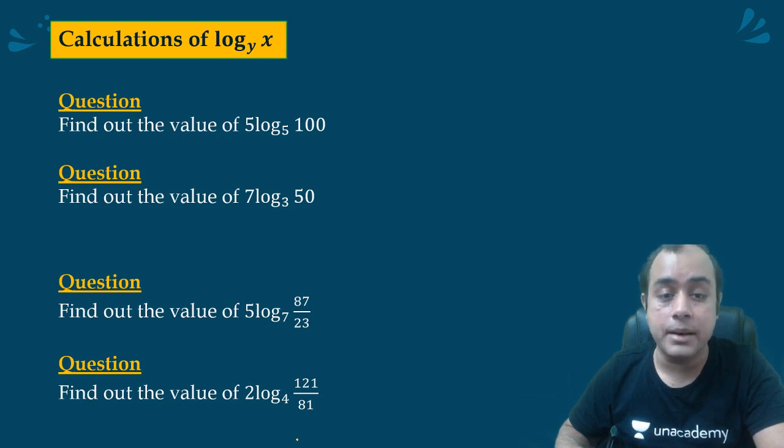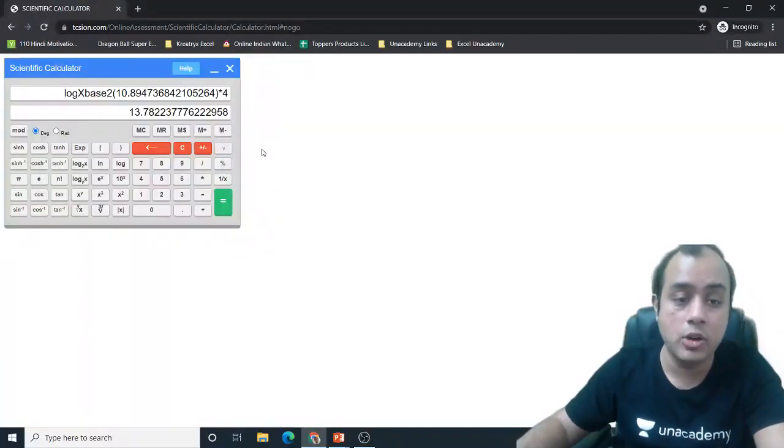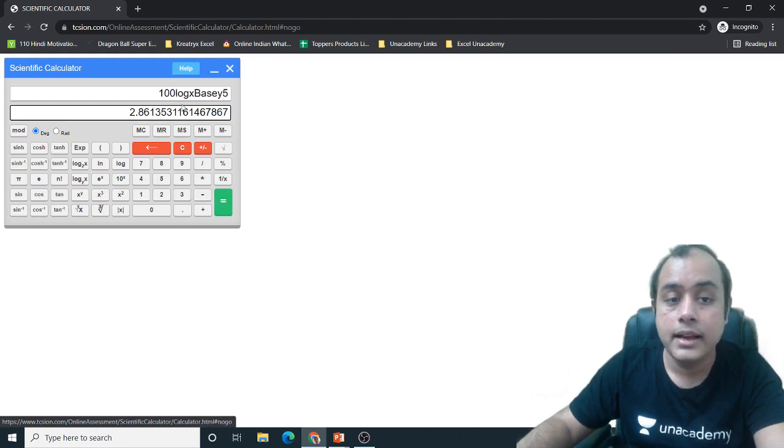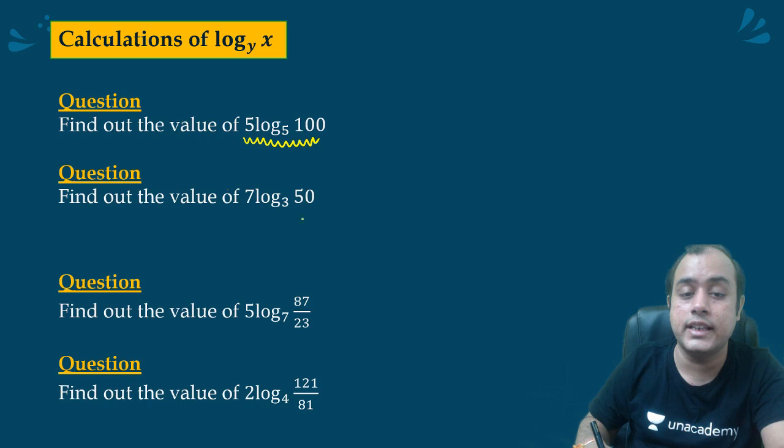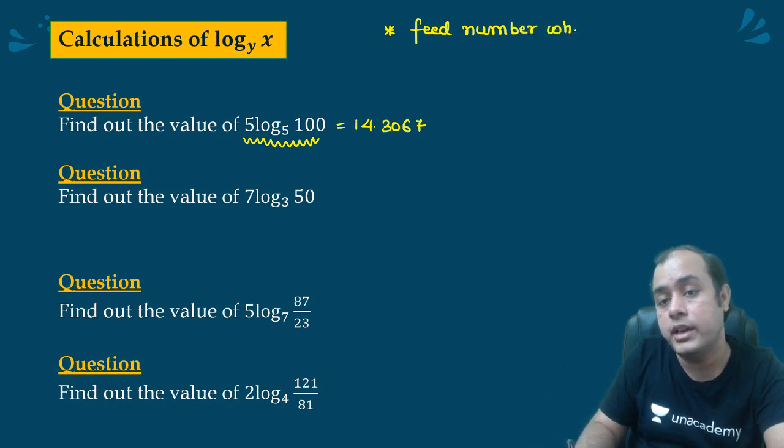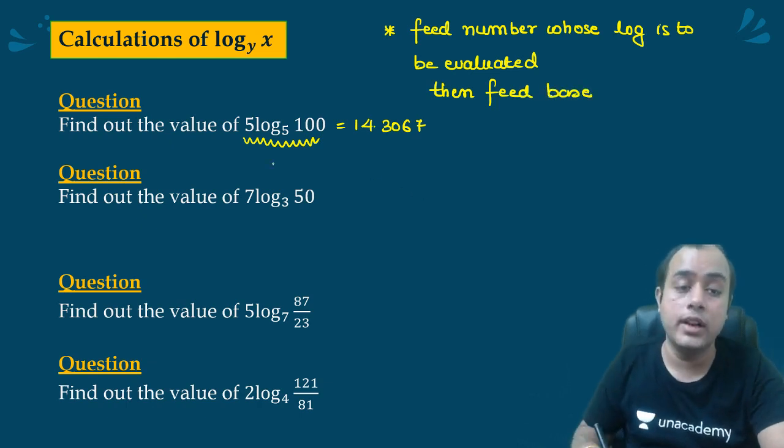But what about I want to change the base? Suppose I want to evaluate 5 log 100 on a base of 5. Let's see. 100 log yx on a base of 5. So first you feed the number, then you feed the base. And what you need to multiply it by? 5. So into 5. 14.3067. Let me write it as well so that you remember it. Feed number whose log is to be evaluated, then feed base. And that is how you will calculate this value.